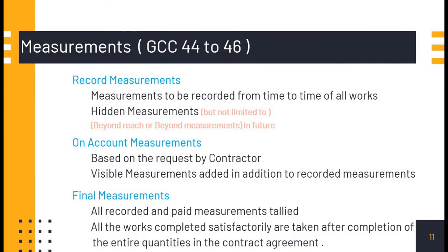Coming to the types of measurements: normally we make record measurements, on account measurements, and final measurements. The flow in the measurement book will be: first we make a record measurement, then there may be on account measurements, and finally, after completion of works, we give final measurements.